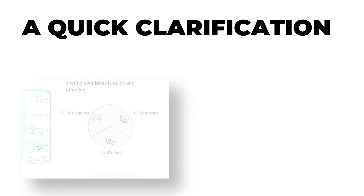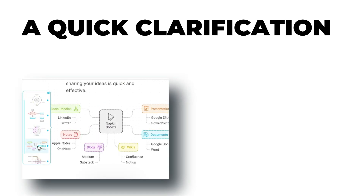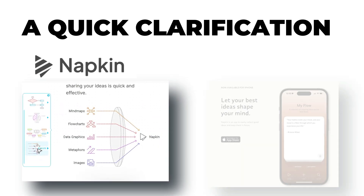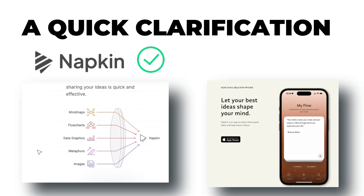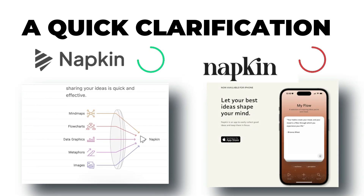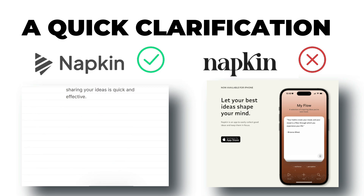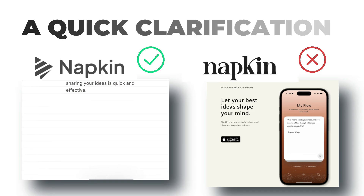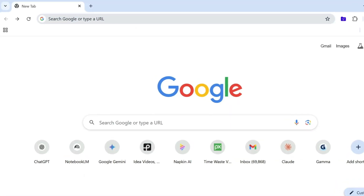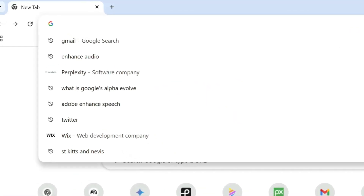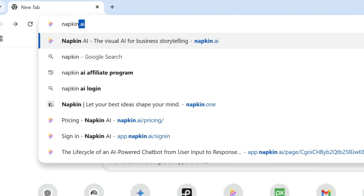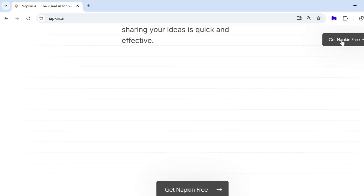Before we dive in, a quick clarification. We are talking about the application napkin.ai. There is another text-based note-taking app from a different country called napkin.one. With that out of the way, let's head over to our browser and type in napkin.ai.